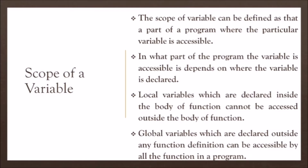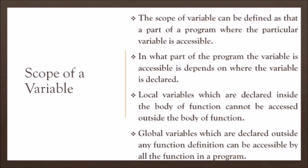The variable which is declared locally is called a local variable. Local variables declared inside the body of a function cannot be accessed outside the body of that function. Global variables declared outside any function definition can be accessible by all functions in a program. So the scope of a variable depends on where you declare it — locally or globally.